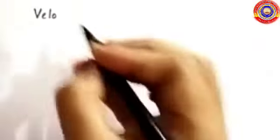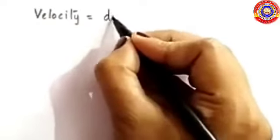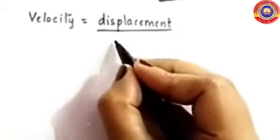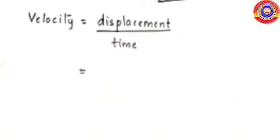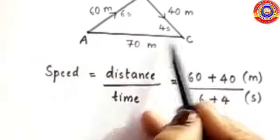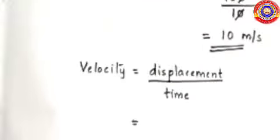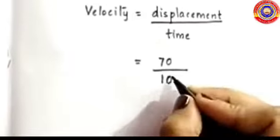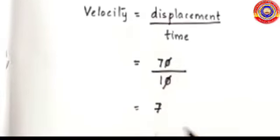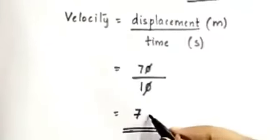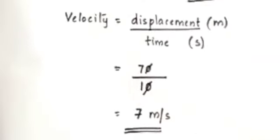Next we find velocity. Velocity equals displacement divided by time. Displacement is the straight-line distance between initial point A and final point C, which equals 70 metres. So 70 divided by 10 equals 7 metres per second. The units of speed and velocity are the same — both have the unit metres per second.